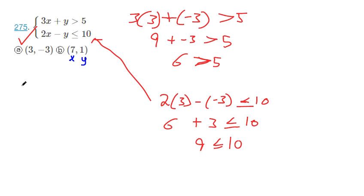If you plug in 7 for x and 1 for y, we'll do some mental math here. 7 times 3 makes 21, 21 plus 1 is 22, and 22 is definitely greater than 5.